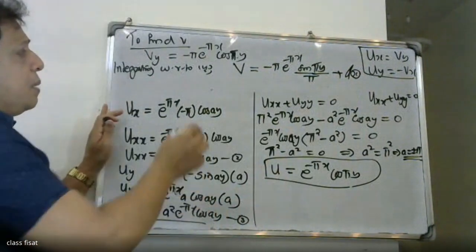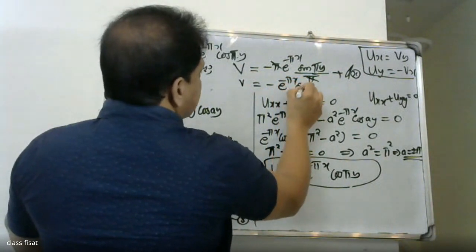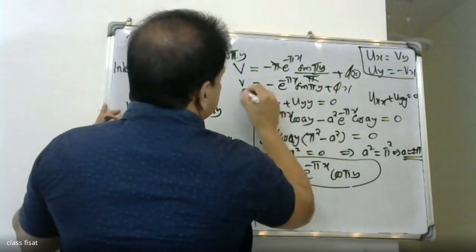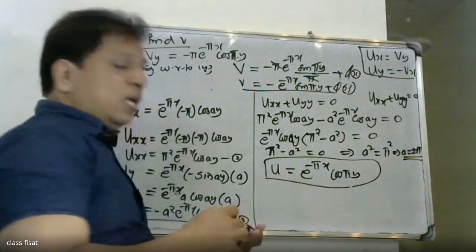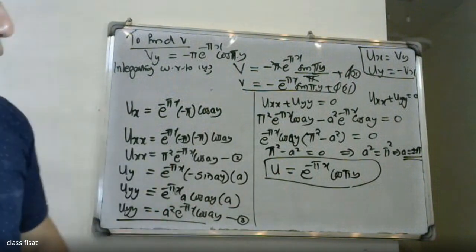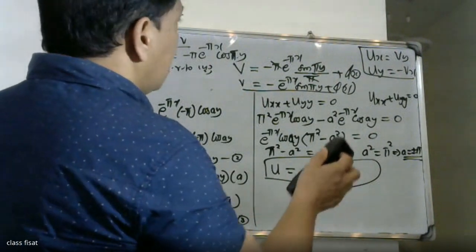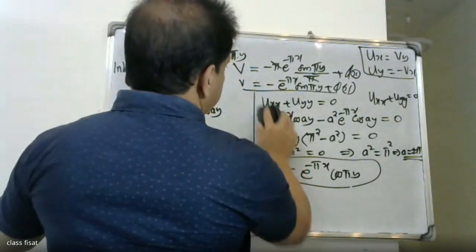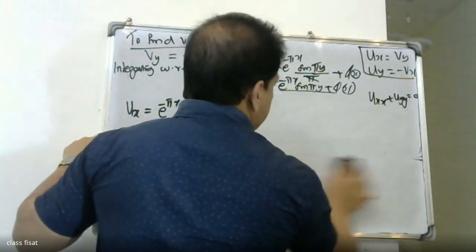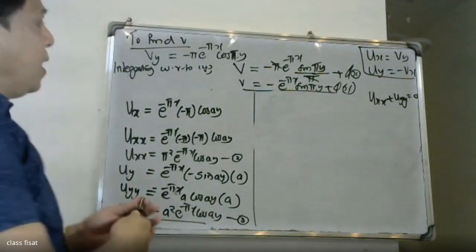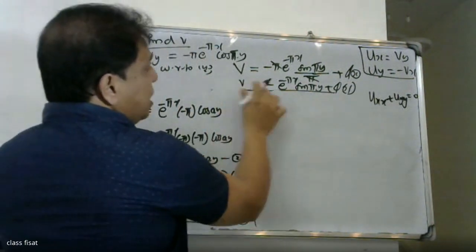Since φ(x) is a constant function with respect to y, and applying the second Cauchy-Riemann condition u_y = -v_x, the arbitrary function φ(x) equals a constant c. Therefore v = -e^(-πx) sin(πy) + c is the harmonic conjugate.